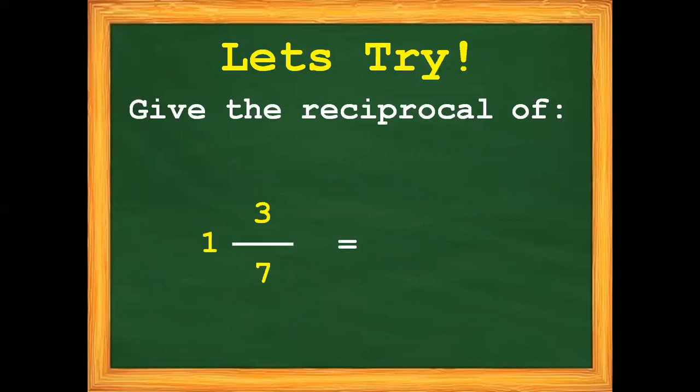How about 1 and 3 sevenths? Same as the earlier example — before we can find the reciprocal of this mixed number, we need to get its improper fraction first. So 1 times 7 gives us 7, then plus 3 gives us 10. So 10 over 7 is the improper fraction of 1 and 3 sevenths. The reciprocal of 1 and 3 sevenths is 7 over 10, or 7 tenths.